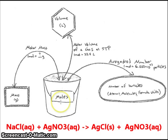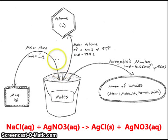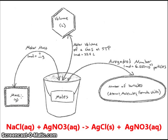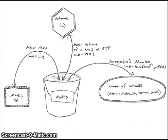This will allow me to calculate how much product — silver chloride — is going to be produced. Then I can use the molar mass of silver chloride to get back out of the bucket and calculate a mass of silver chloride that I would expect to have at the end of this reaction.